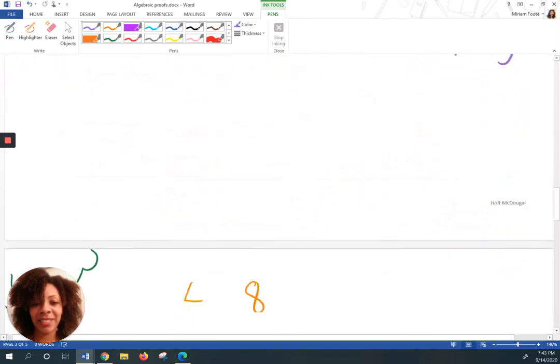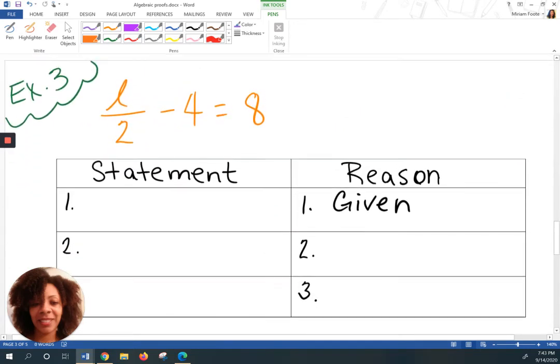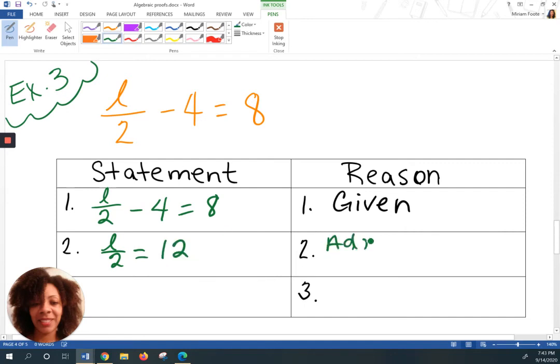Let's get another example, this time using a fraction. So I'm going to write my statement, which is the actual problem. And you would not normally, this would not be pre-written for you. So you have to remember 99% of the time, the first reason is given. What would you do after this? Me, I would add 4 to both sides, which would leave me with L over 2 is equal to 12. And I said I'm going to add. So that's the addition property of equality.